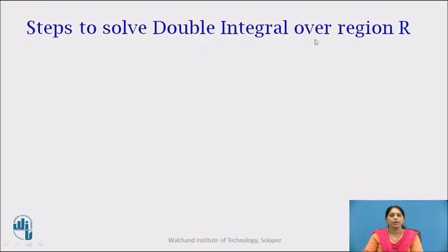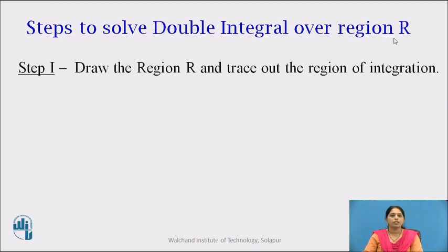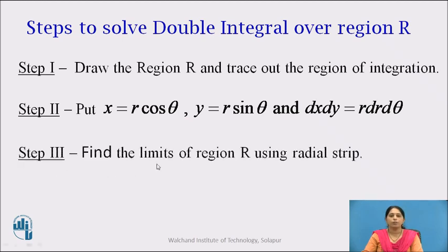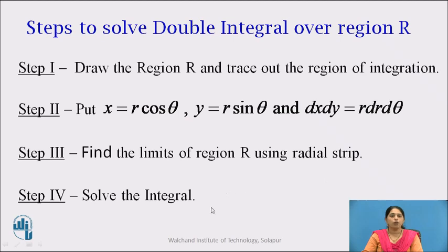Now, let us see the steps to solve the double integral over the region R. Step 1: draw the region R and trace out the region of integration. Step 2: put x equals to R cos θ, y equals to R sin θ, and dx dy equals to R dr dθ. By this substitution, we convert the given Cartesian system to polar system. Step 3: find the limits of region R using a radial strip. As we have converted the given Cartesian region to the polar region, we will draw a radial strip to find the limits. Step 4: solve the integral.